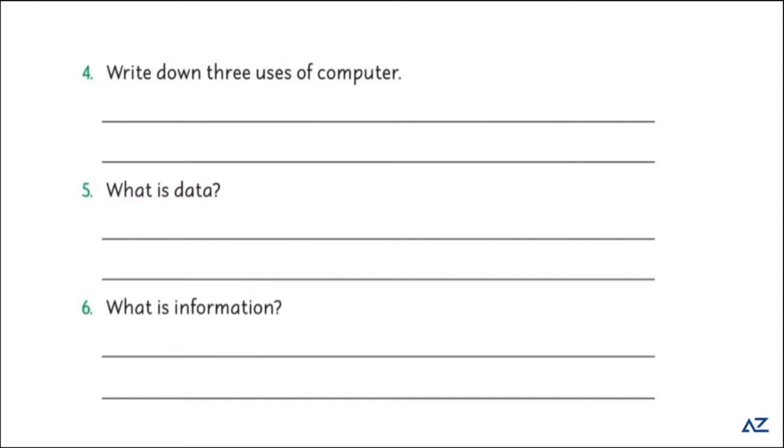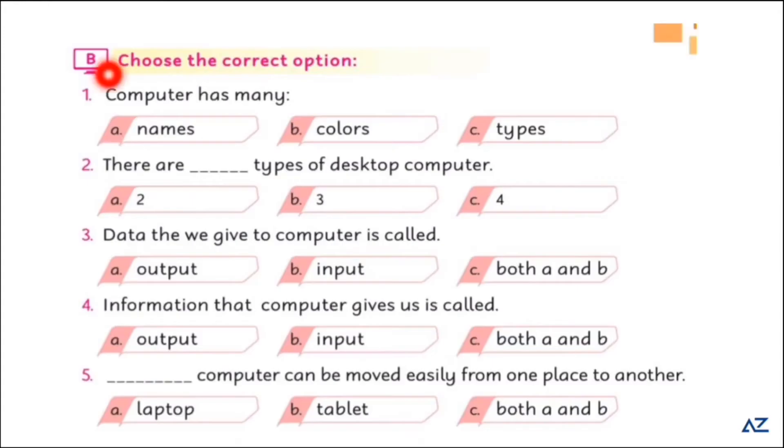What is information? Information kya hoti hai? Information is well organized form of data which is understandable by a common person or device. Choose a correct option. Computer has many types. There are two types of desktop computer.